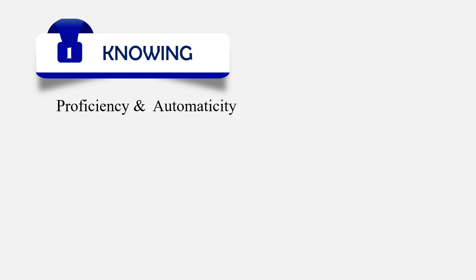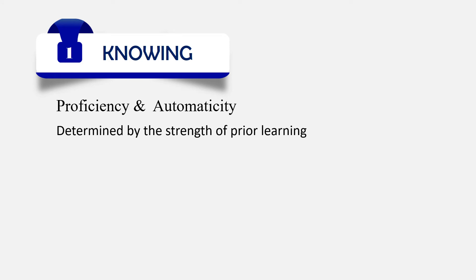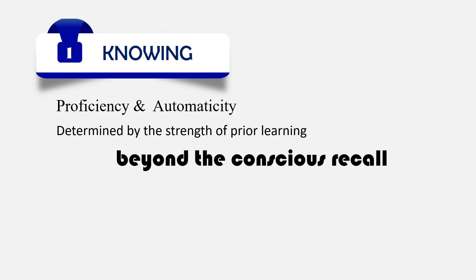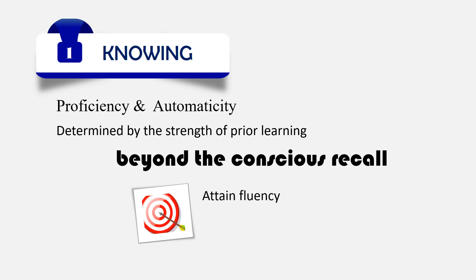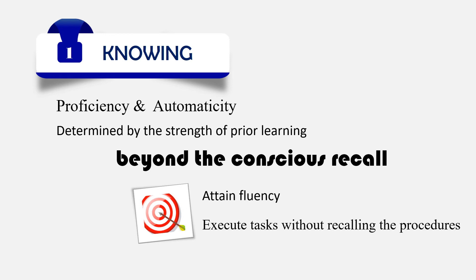Proficiency and automaticity are determined by the strength of prior learning. When mastery of a skill or concept is attained, the learner moves on to the sub-stages of proficiency and automaticity. The student moves beyond the conscious recall of content knowledge thus mastered or the performance of the skills. The goal is to attain fluency so that the skills are automatically applied to appropriate situations in everyday life. The learner executes the task immediately and successfully without the need to recall the procedures.